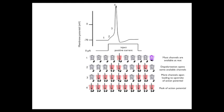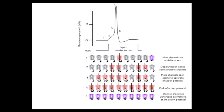All of the sodium channels then inactivate, thereby closing their inactivation gates, which causes the downstroke of the action potential, position 5. The repolarization of the membrane is due to the opening of voltage-gated potassium channels, which are not shown here. The key event that triggers the entire sequence is the opening of additional sodium channels caused by the initial depolarization at position 2, which sets up the positive feedback for opening more sodium channels and thus the upstroke of the action potential.